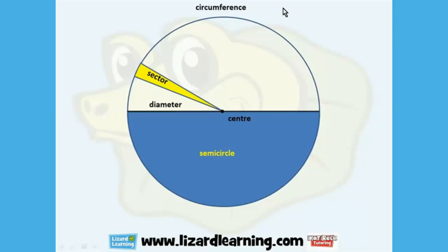The sector is a piece, like a piece of pizza taken out of a circular pizza. A quarter of a circular area is a quadrant.